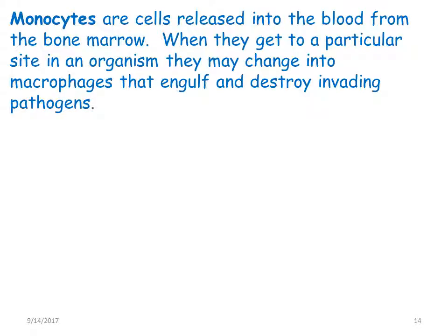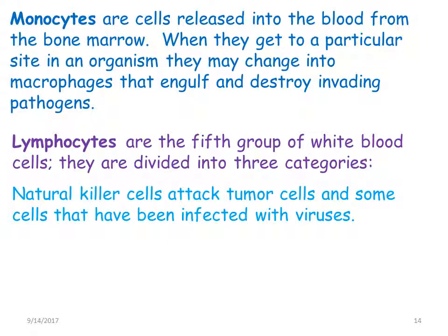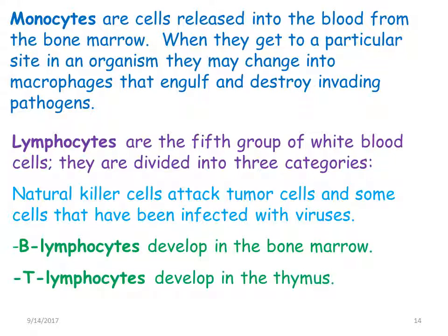Monocytes are released into the blood from the bone marrow, and when they reach a particular site in an organism they may change into macrophages that engulf and destroy invading pathogens. Lymphocytes are divided into three categories: natural killer cells, which attack tumor cells and virus-infected cells; B lymphocytes, which develop in the bone marrow; and T lymphocytes, which develop in the thymus. In a peripheral smear, however, we cannot differentiate between these different types.